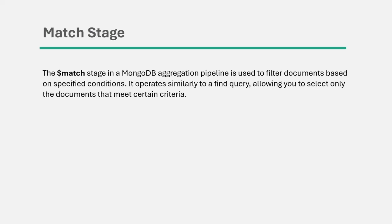The match stage, represented by the dollar match operator, is used to filter documents based on a specified condition. It operates similar to a find query — it allows you to select only the documents that meet a certain criteria. Let's try to understand it with an example.